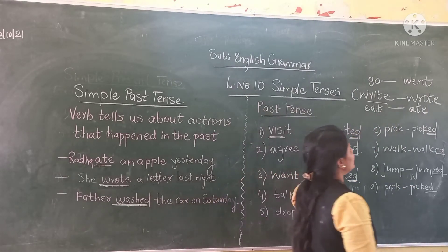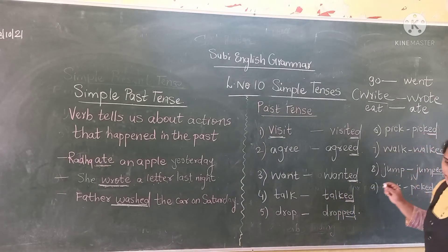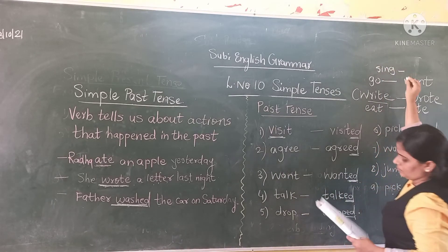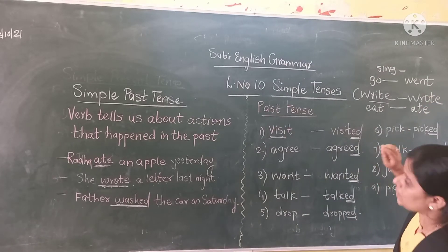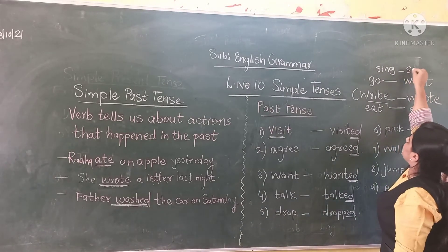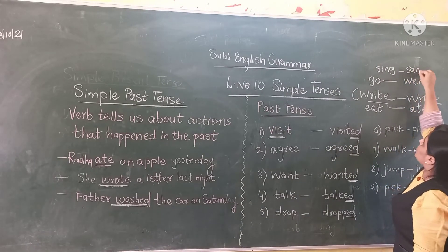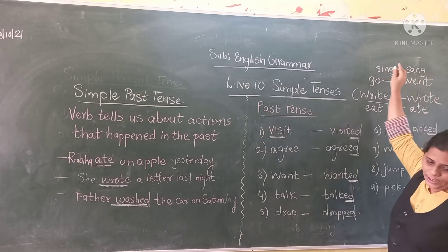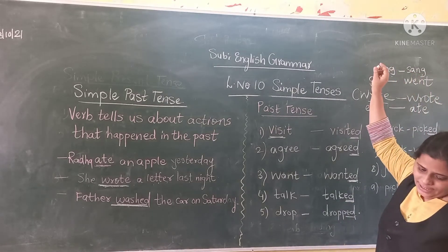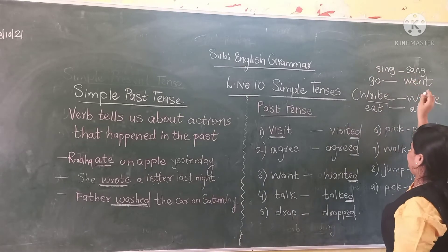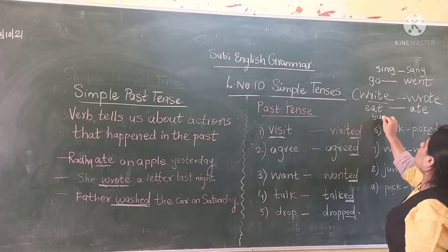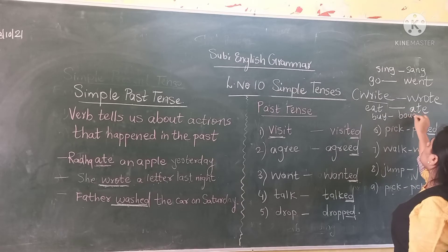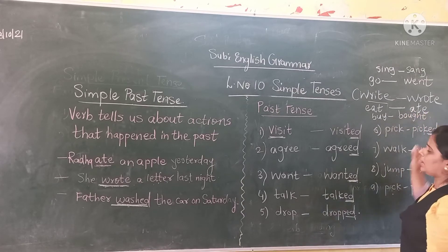More irregular verbs: 'see' → 'saw', 'say' → 'said', 'buy' → 'bought'. So there are irregular verbs whose past forms are completely different.